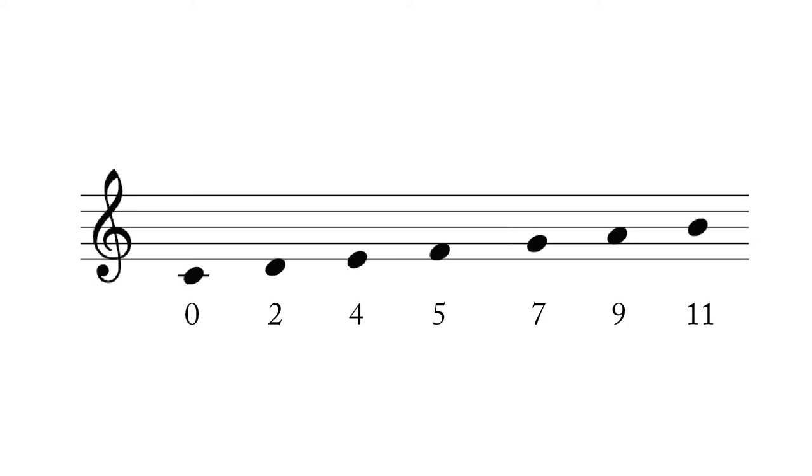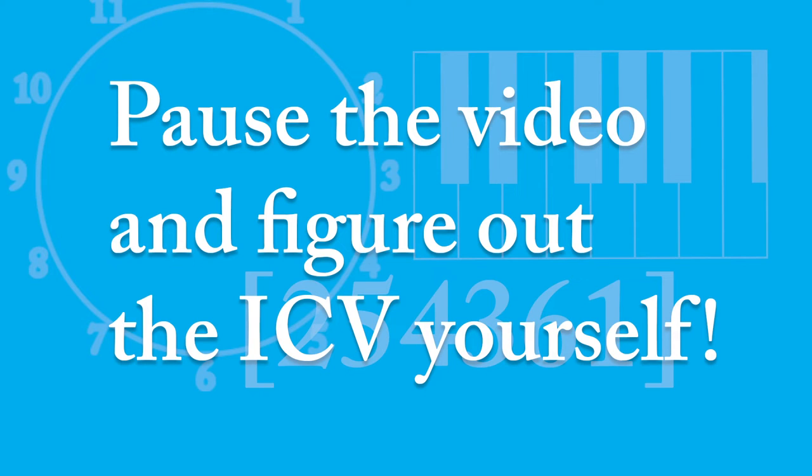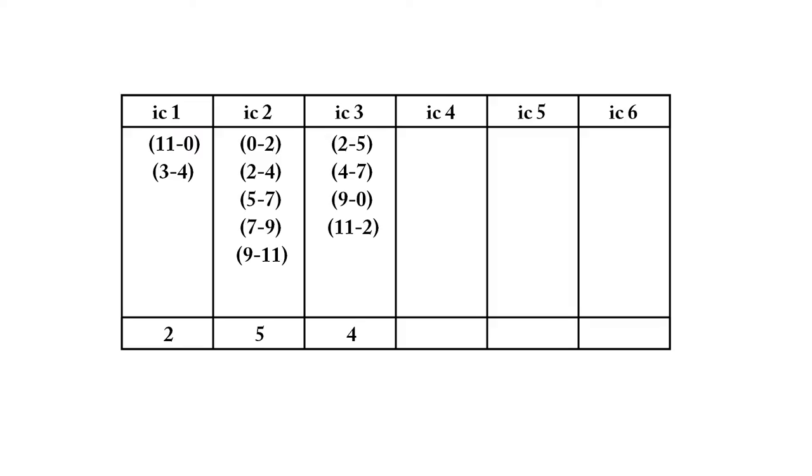The first sonority I'll show you is the diatonic scale. Since we're getting the hang of the procedure for figuring out the interval class vector, I'll move more quickly through this. So the interval class vector for the diatonic collection is 254361.